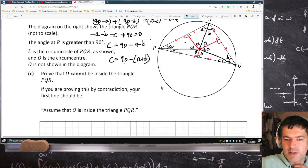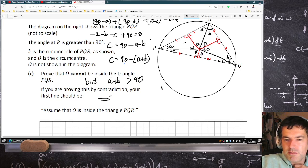But here's the problem. You're told that angle at R is greater than 90, but A plus B is greater than 90. So what that means is that C will be negative, and hence a contradiction.